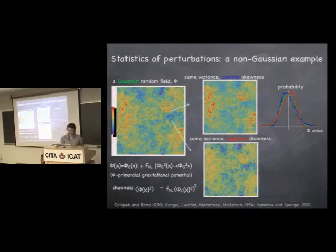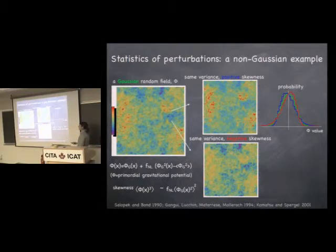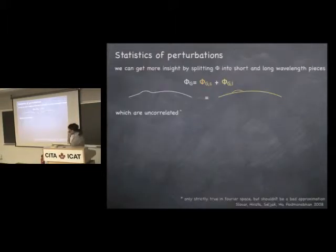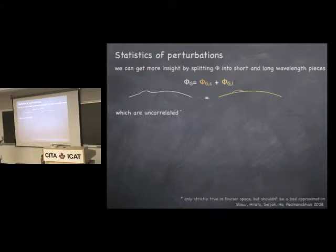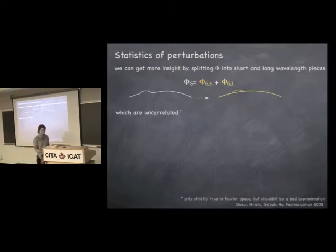This is one example of non-Gaussianity, and people look in the microwave background for if this type of non-Gaussianity exists, to put constraints on this parameter — it's actually constrained quite well. You can get a little bit more insight into what non-Gaussianity does by doing something called a peak-background split approach, which is to remember that for a Gaussian field, different Fourier modes are strictly uncorrelated. But that's not true for a non-Gaussian field.